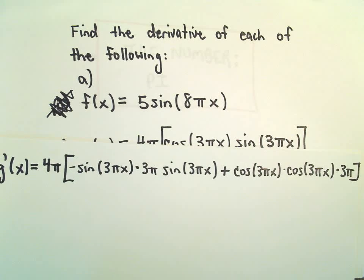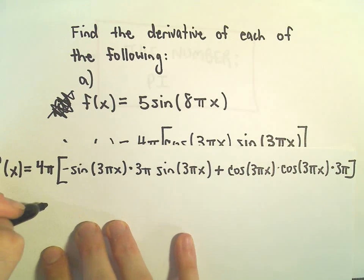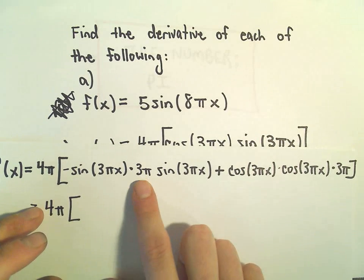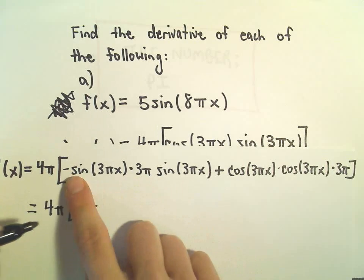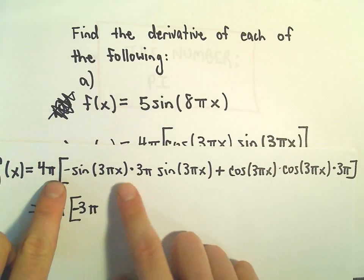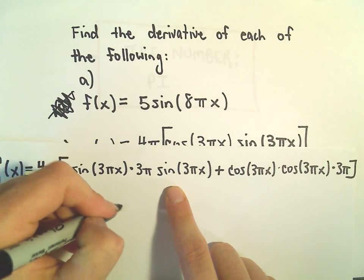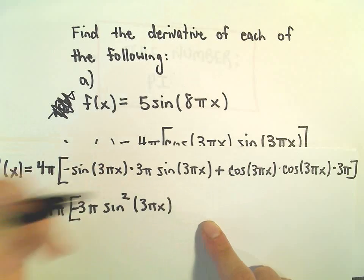Alright, so I think we've got it all in there. In terms of simplification now, we've got 4π. We've got 3π in here. I'm going to pull that out front. We've even got a negative, so let me make that negative 3π. Then we have sine of 3πx times sine of 3πx. I'm going to write that as sine squared 3πx.